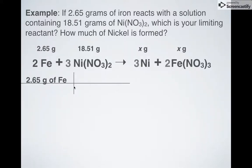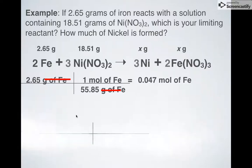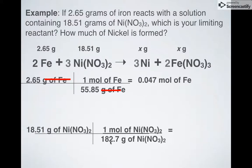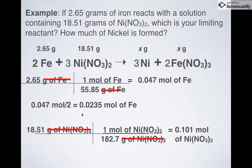2.65 grams of iron. What's the molar mass of iron on the periodic table? It's 55.85. Everything cancels. 0.047 moles of iron. Next up, 18.51 grams of nickel to nitrate. What's the molar mass of nickel to nitrate? 182.7. That gives me about 0.101 moles of this stuff. Now I have to use my balanced equation. I divide this by 2. I divide that by 3. When I divide that by 2, I get this. When I divide that by 3, I get this.